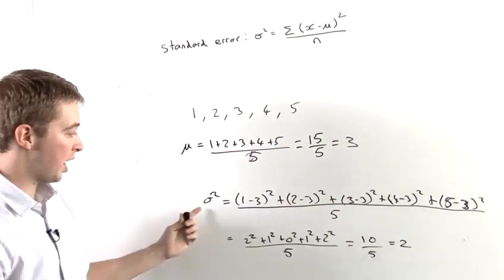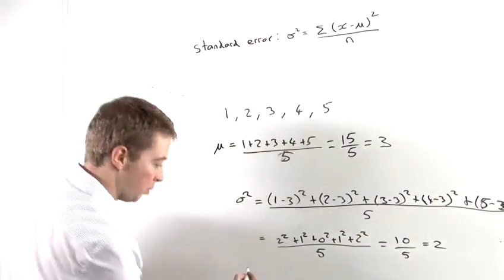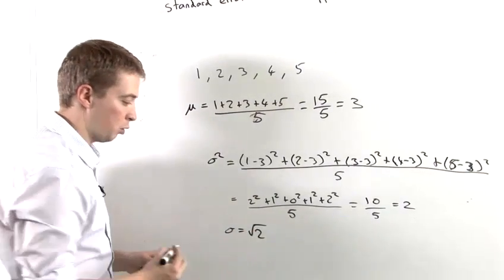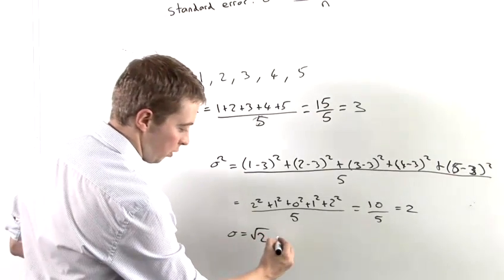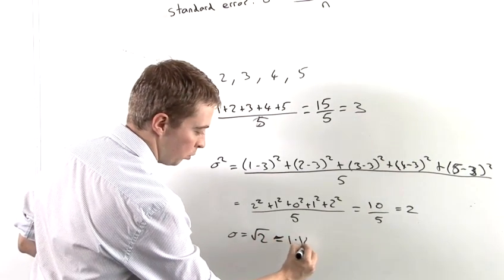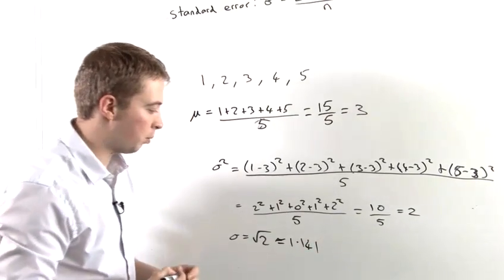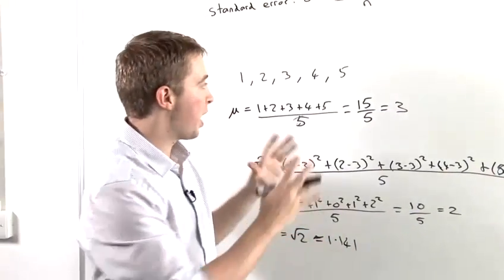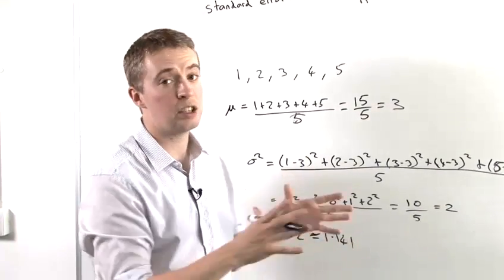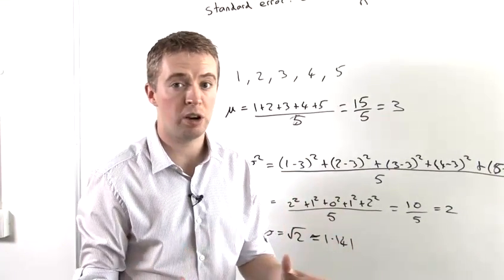So that's our sigma squared. So sigma is going to equal the square root of 2, which is roughly 1.141, which gives us an idea about how much this data is spread. That's what the standard error is a measure of. It's a measure of the spread of the data.